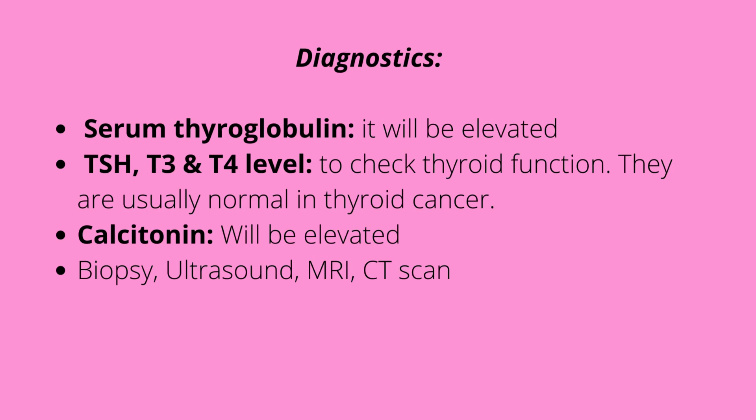TSH, T3, and T4 levels are usually normal with thyroid cancer — that's something you need to know. Calcitonin will be elevated. Remember the parathyroid glands release calcium and are located on top of the thyroid, so if there's an issue the parathyroid glands will be affected. We can also do a biopsy, ultrasound, MRI, and CT scan.